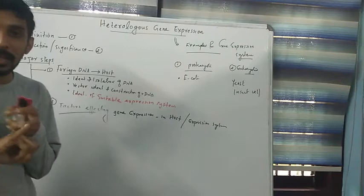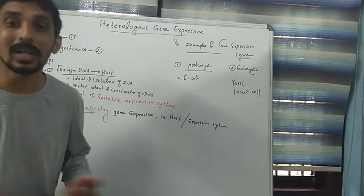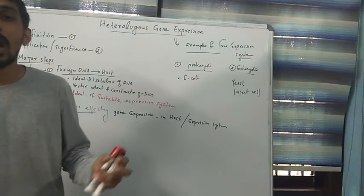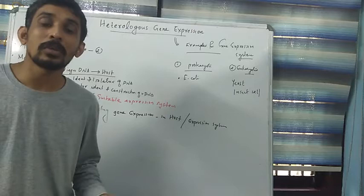One application of heterologous gene expression is: suppose we need to produce a large amount of protein from a gene. It is better to use a microscopic organism like E. coli or yeast for producing protein at commercial scale. We can transfer a particular gene into yeast or into E. coli, and thereby synthesize more protein at less expense.